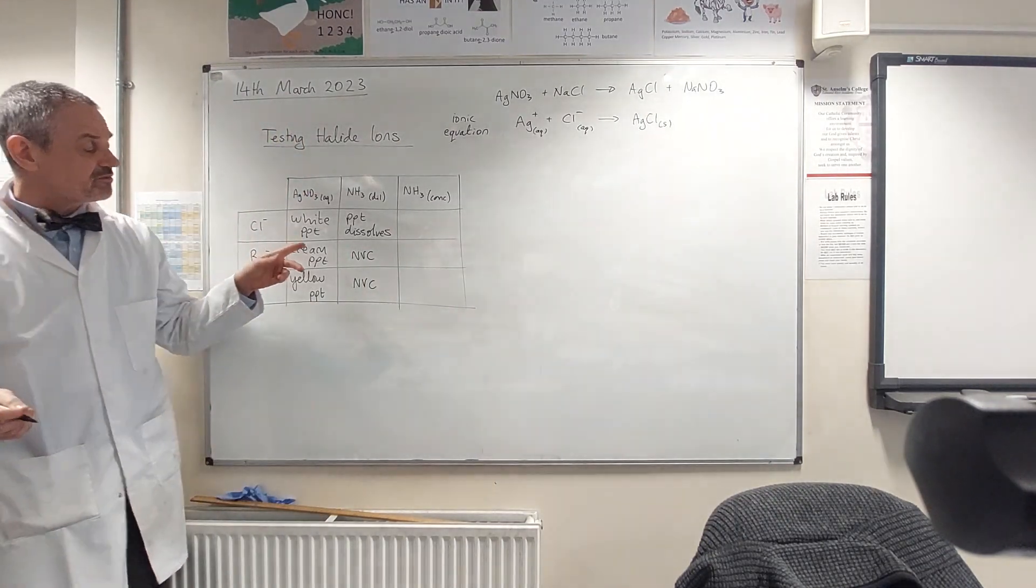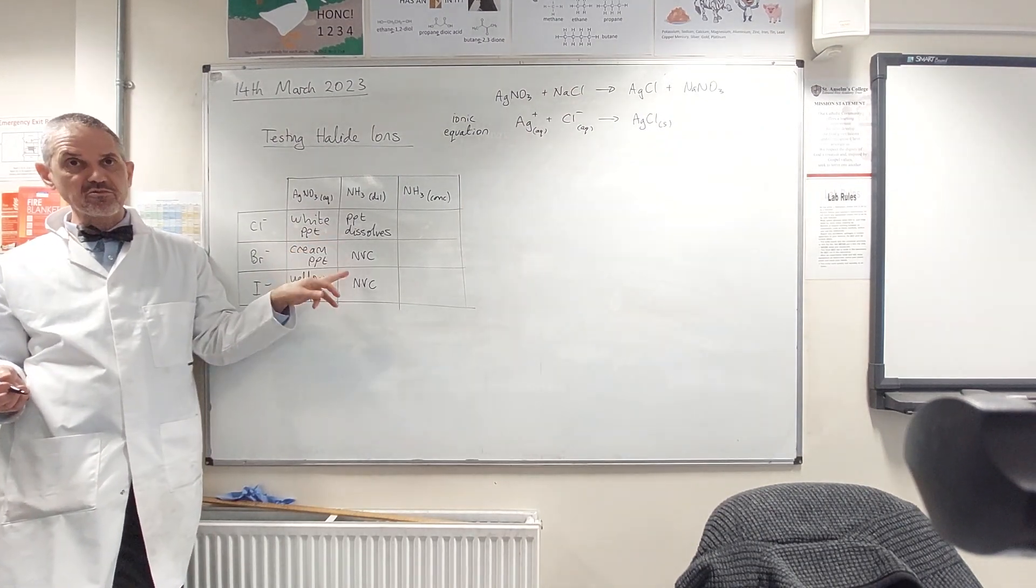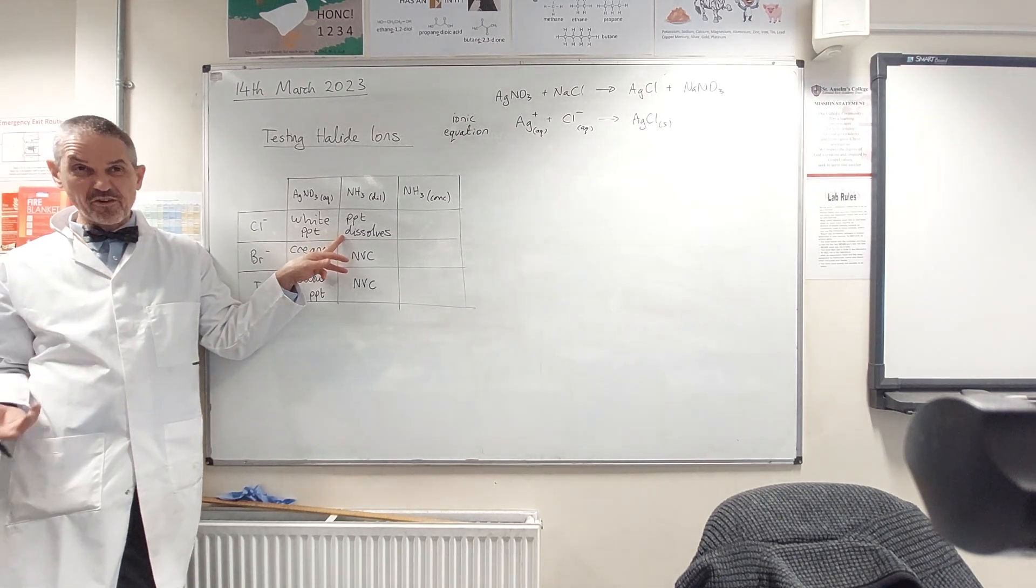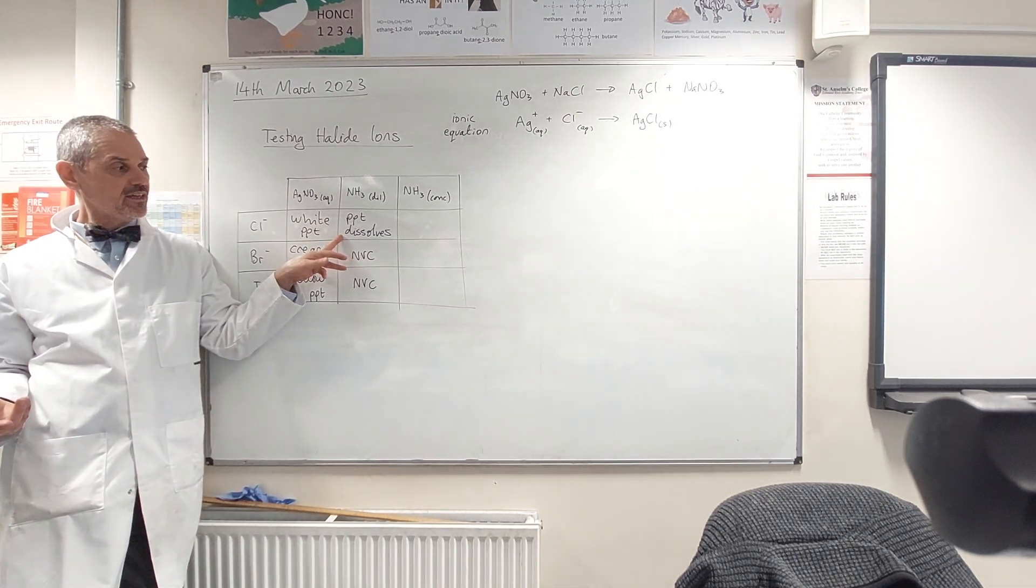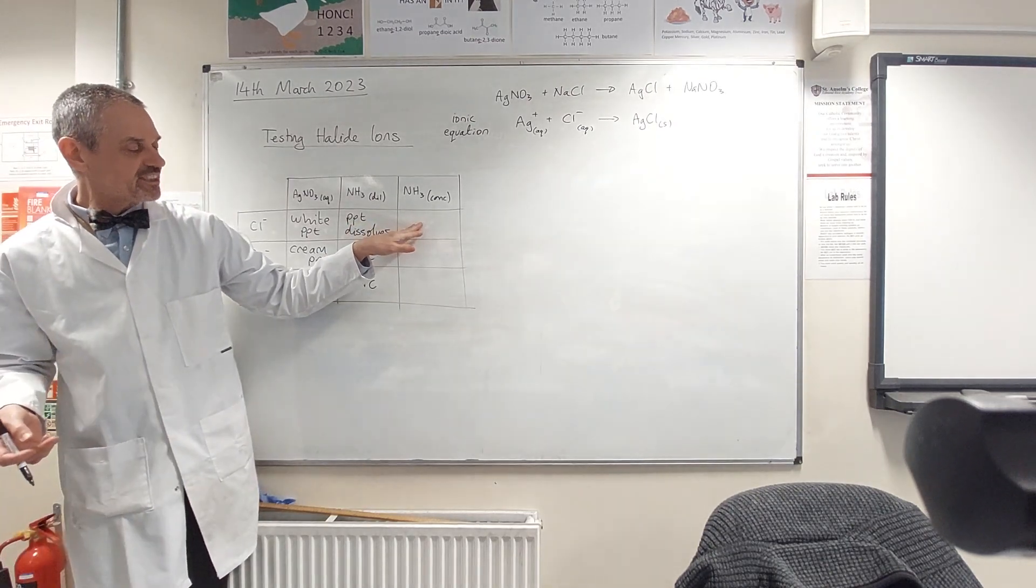Okay, so we've helpfully distinguished the chloride precipitate from bromide and iodide because the chloride precipitate is the only one that dissolves in dilute ammonia. But we haven't distinguished these two, so let's march on for concentrated ammonia.